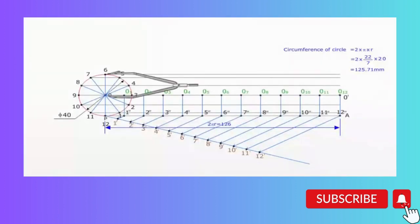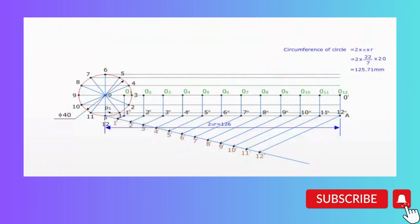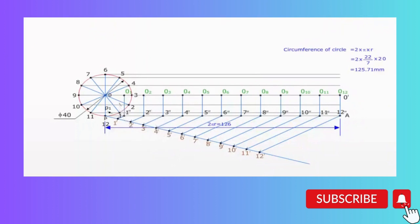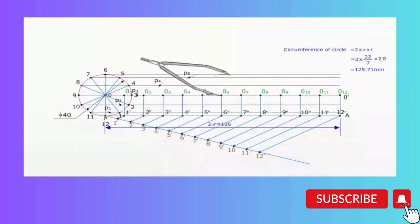With O1 as centre and radius equal to the circle radius 20 mm, draw an arc intersecting the lines through 2 at P1. P1 is the position of the point P when the centre of the generating circle moves to O1. With O2 as centre and radius 20 mm, draw an arc intersecting the lines through 2 at P2. Similarly, locate the points P3, P4, P5, P6, P7, P8, P9, P10, P11, and P12.